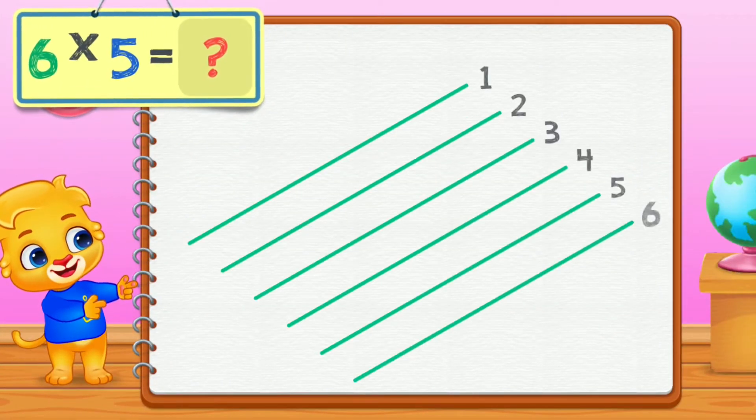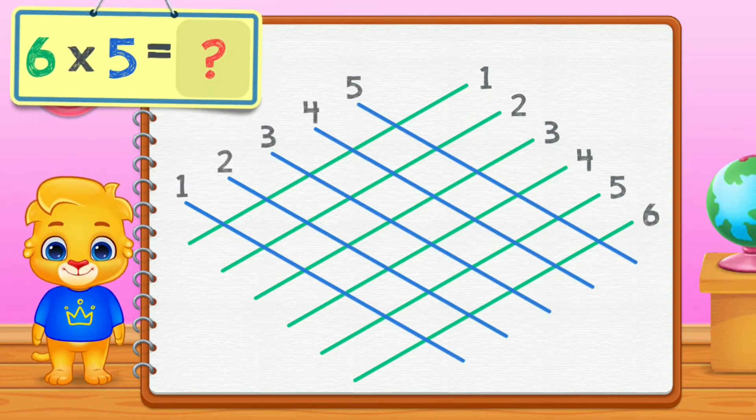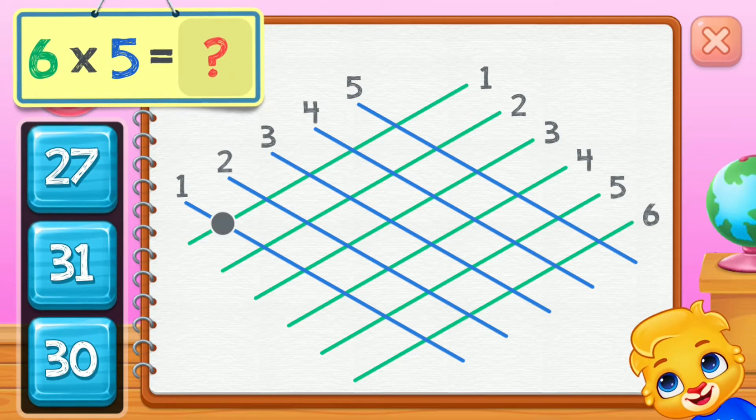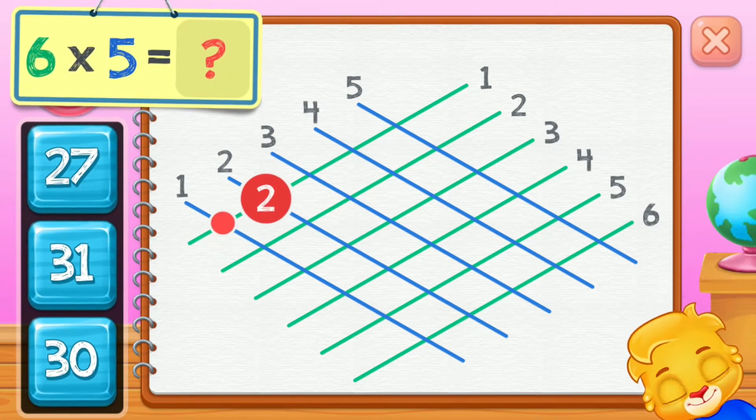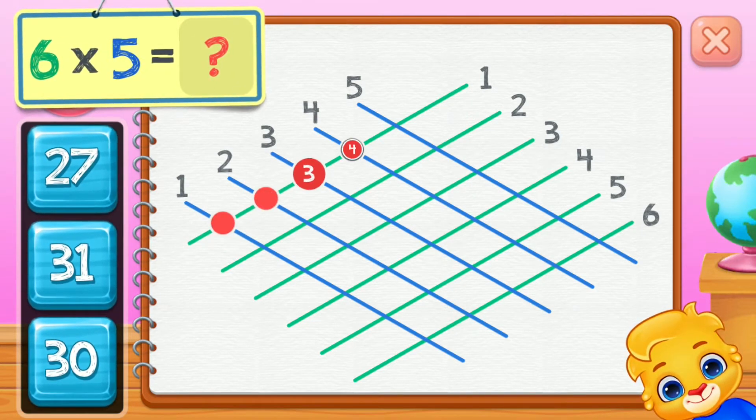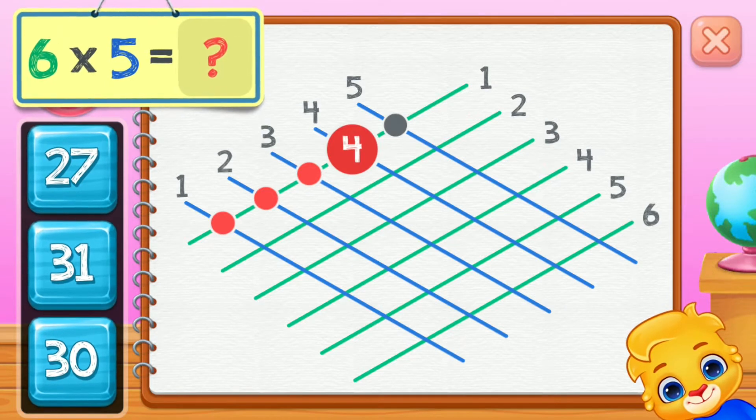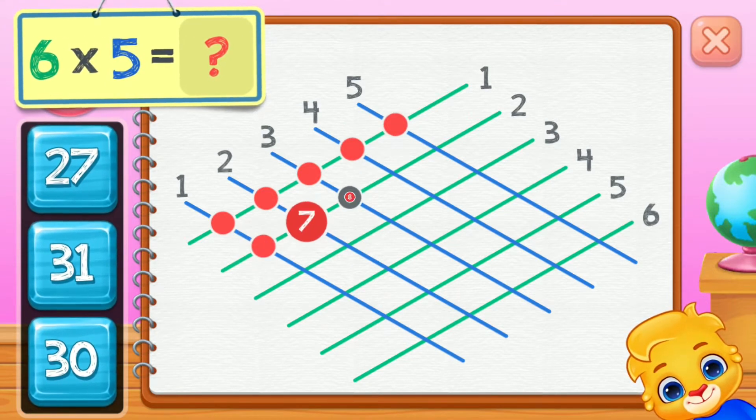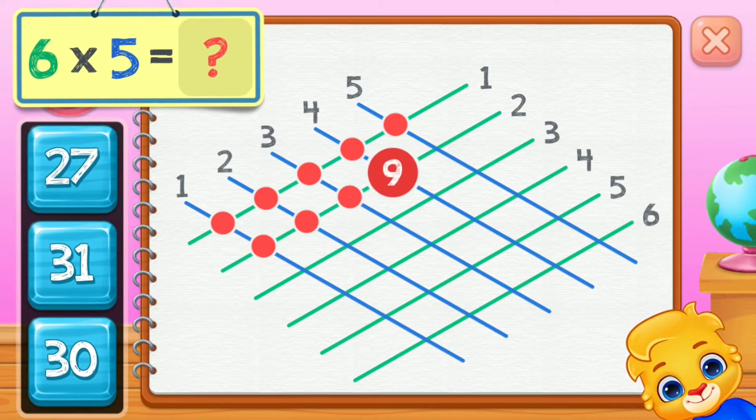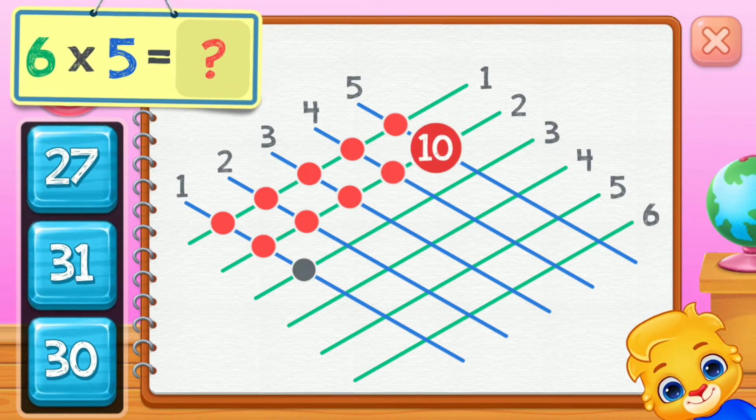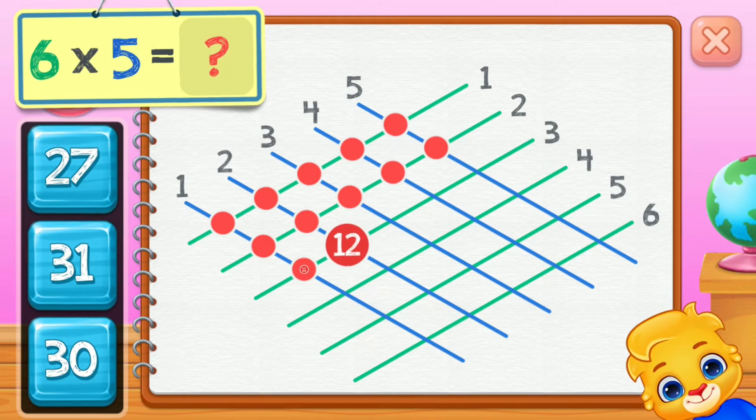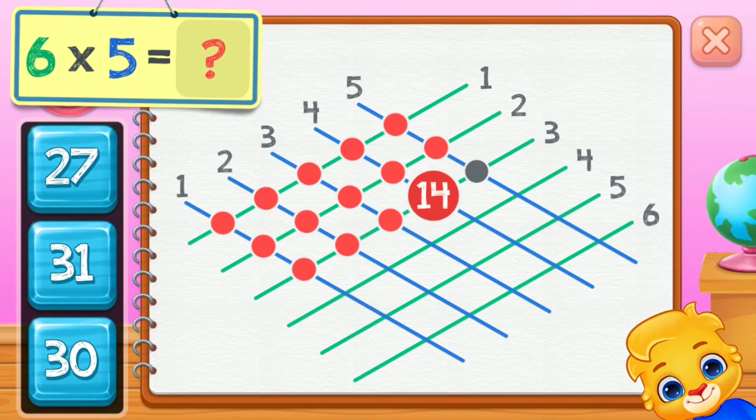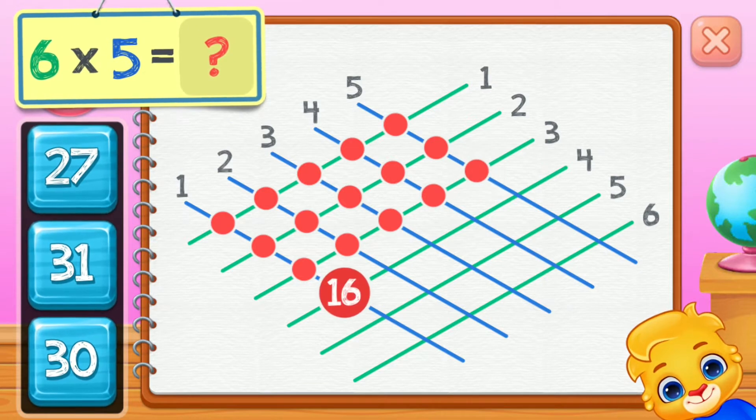6 times 5 equals... 1, 2, 3, 4, 5, 6, 7, 8, 9, 10, 11, 12, 13, 14, 15.